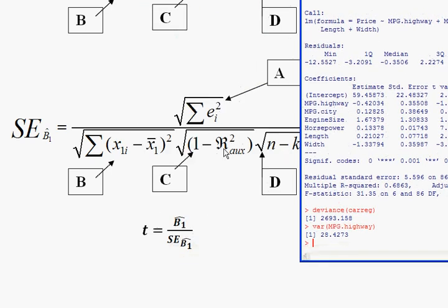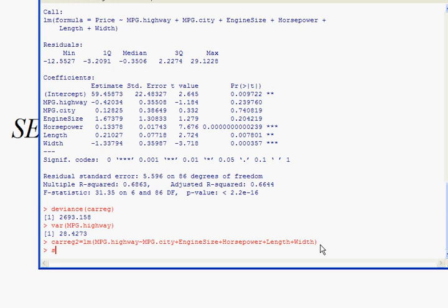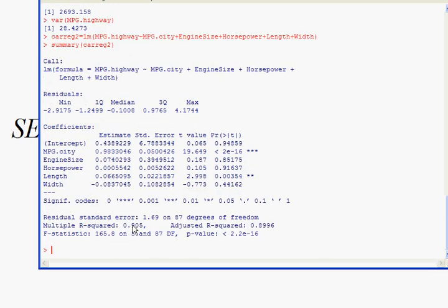Now we need to run this other regression. Let me do that real quickly here. We need to run the regression, and I'll call this car regression number 2. That regression that we want to do is taking MPG highway as the dependent variable. And then I have all the other explanatory variables over there. Let's get that R squared by doing a summary of that regression, carreg 2. And we see that that R squared is 0.905. Okay, interesting. Now, we have all the information we need to get going here. Let's go to Excel with those numbers and calculate this standard error.